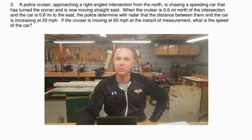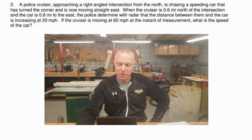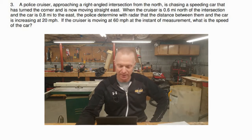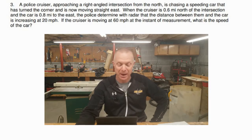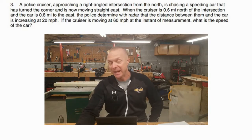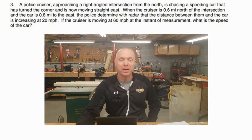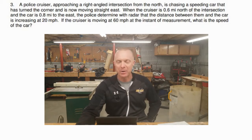It says that a police cruiser approaching a right-angled intersection from the north is chasing a speeding car that has turned the corner, is now moving to the east. Sounds like a compass problem. When the cruiser is 0.6 miles north the intersection and the car is 0.8 miles to the east, the police determine with radar that the distance between them and the car is increasing at 20 miles an hour. So if the cruiser is moving at 60 miles an hour, at the instant of that measurement, what is the speed of the car?